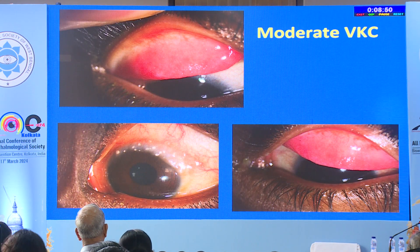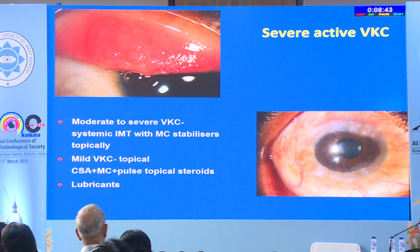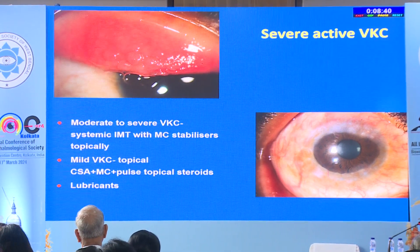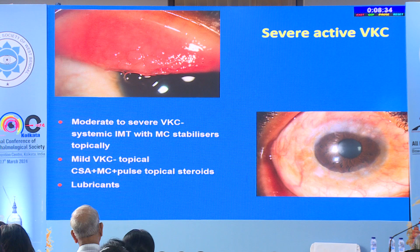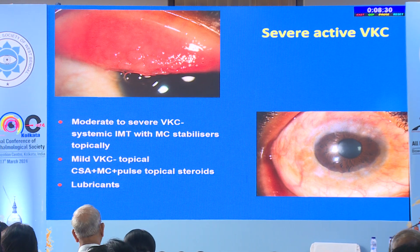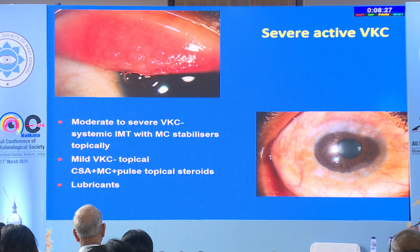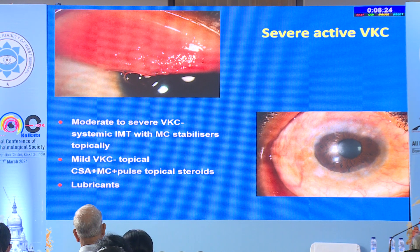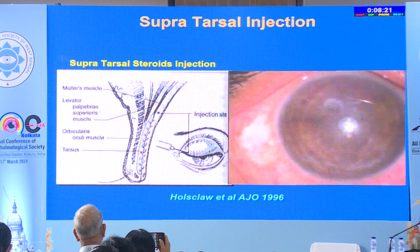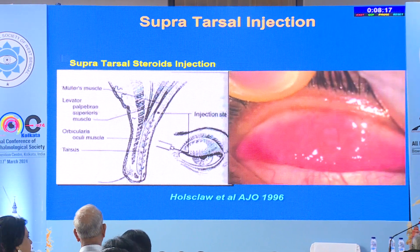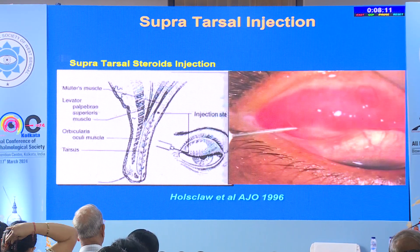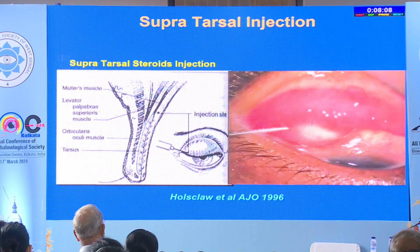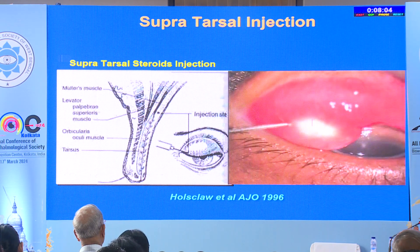For moderate to severe disease, I prefer to treat with systemic immunosuppressives. For mild VKC, lubricant, mast cell stabilizer, and mild topical steroids as needed may be okay, but for moderate to severe, I would strongly recommend systemic treatment. Sometimes supratarsal steroid injections may work when there is limited upper tarsal disease and you don't want to expose the patient to systemic treatment, especially during acute relapse.